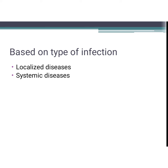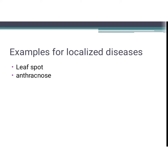Various classifications are based on effect. The first classification is based on type of infection. Plant diseases are classified into localized diseases and systemic diseases. Localized diseases are those where the infection is in a particular part of the plant — the key point is a particular part. Systemic disease is where almost the whole plant is affected. Key point: localized disease means a particular part; systemic disease means almost the whole plant.